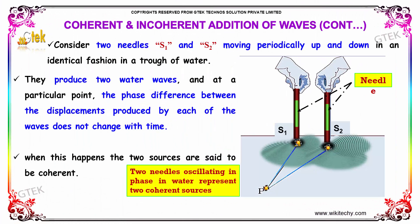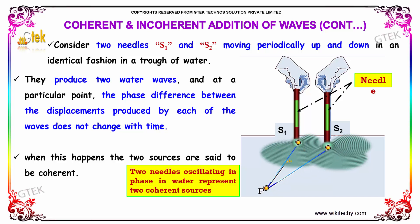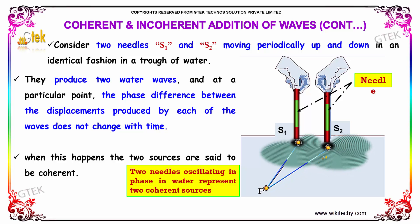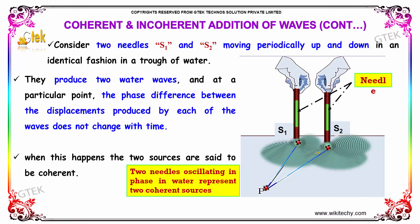Consider two needles, S1 and S2, moving periodically up and down in an identical fashion in a trough of water. They produce two water waves, and at a particular point, the phase difference between the displacement produced by each of the waves does not change with time. When this happens, the two sources are said to be coherent.